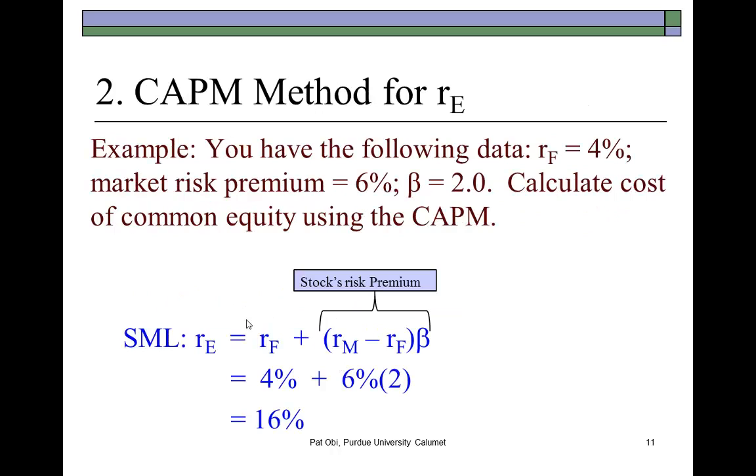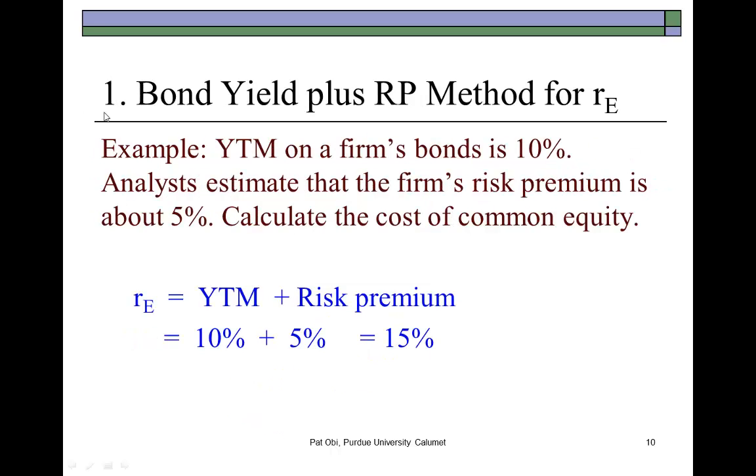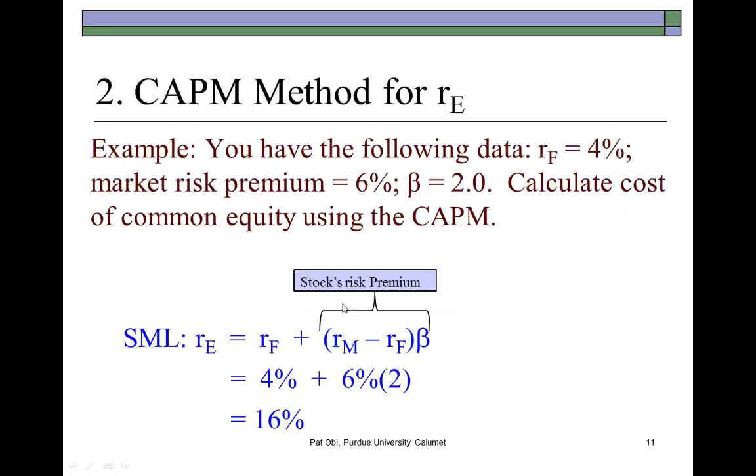Next is the CAPM, the Capital Asset Pricing Model, which is also simple since you've already learned the CAPM and risk and return. Using the security market line equation, we find the risk-free rate in this example 4%, and then the market risk premium, which is defined by this term here. In this example, it's 6%. The stock's risk premium would be equal to the market's risk premium multiplied by the stock's beta. This comes out to be 12%. This 12% plus 4% gives us an estimate of 16% as the firm's cost of equity.